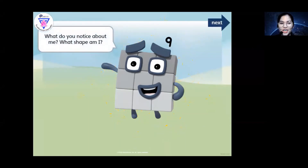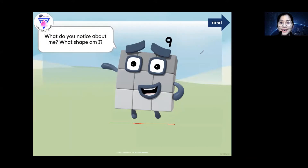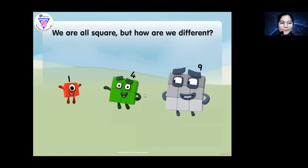So what do you notice about me? What shape am I? What shape do you see? Is that a circle? I guess it's not a circle, right? So this is a square. That is a square. So we are all squares, but how are we different?